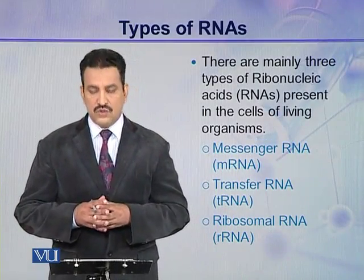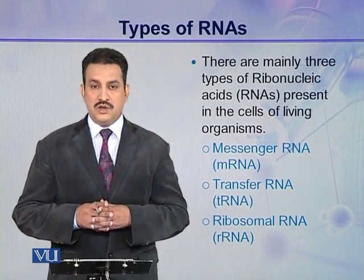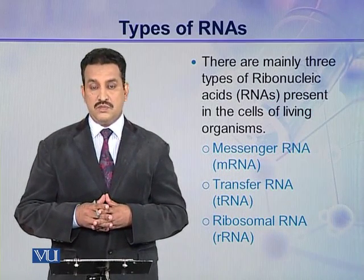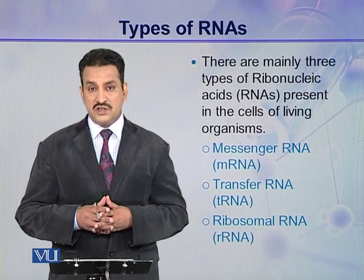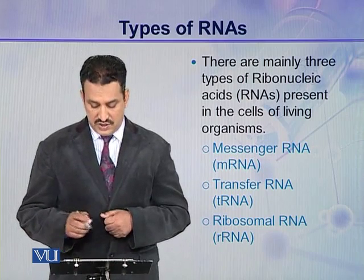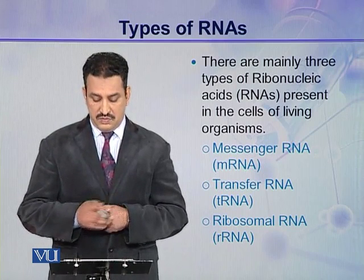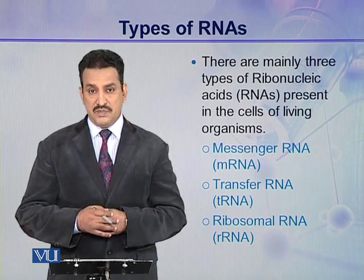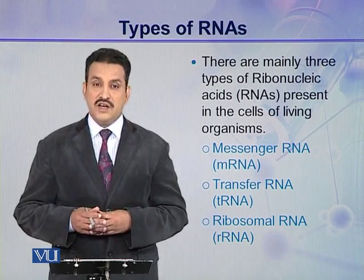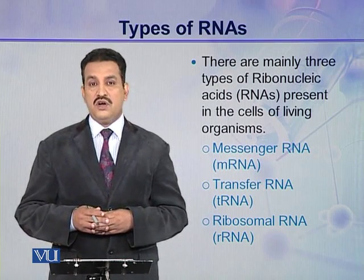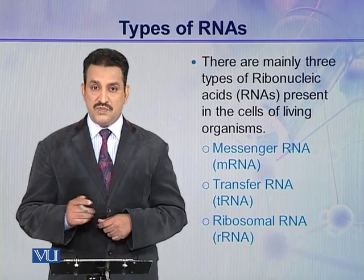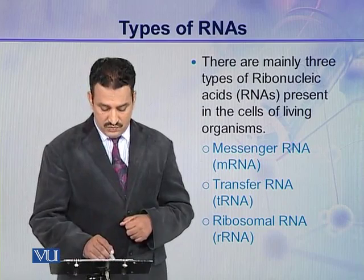Let us see different types of RNAs. As you know, only one type of DNA is present in the cells, but the ribonucleic acids are of three types present in the living organisms. These are messenger RNA or mRNA, transfer RNA or tRNA, and ribosomal RNA or rRNA. So these three types of ribonucleic acids are present in the cells of living organisms.